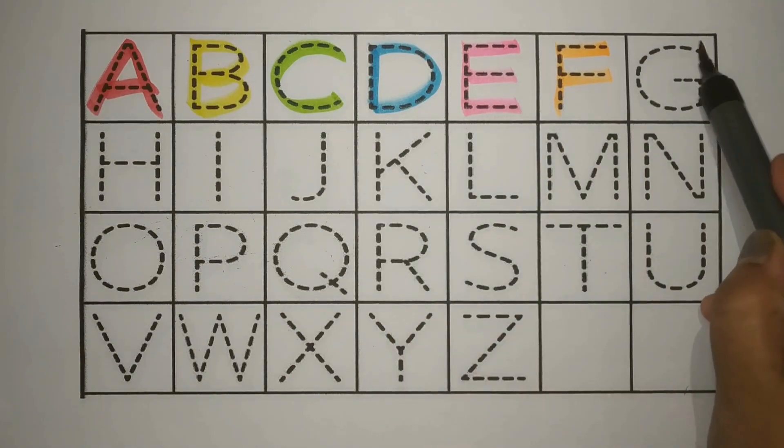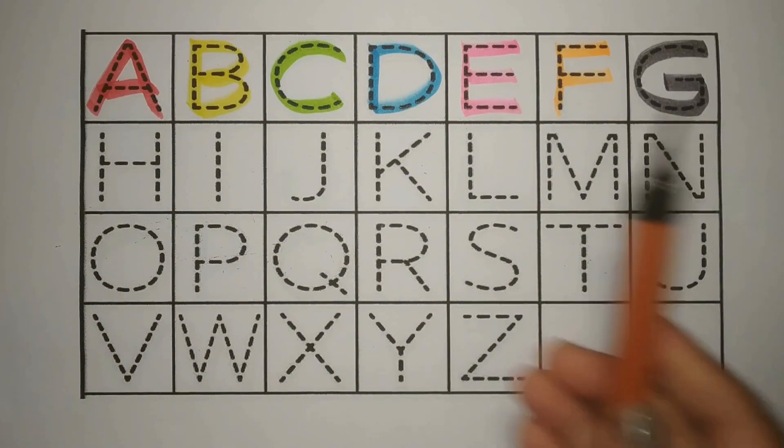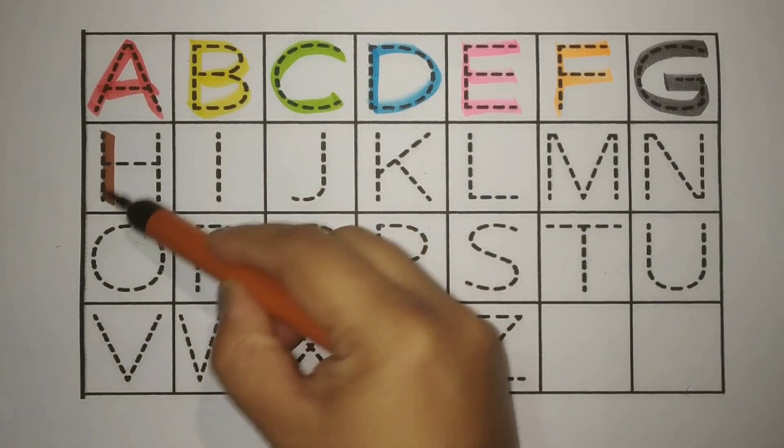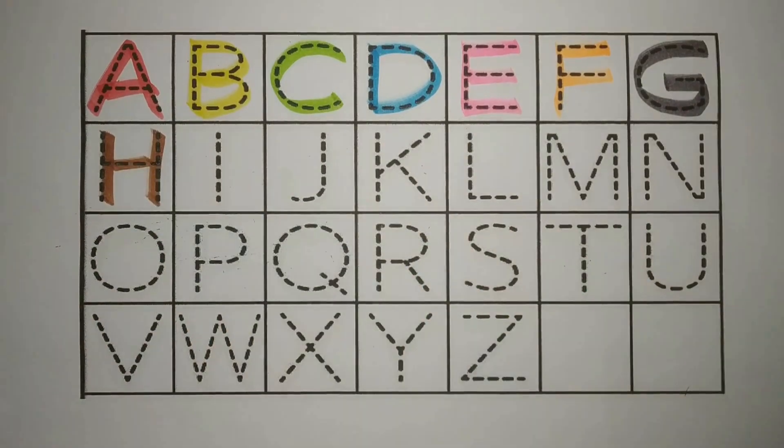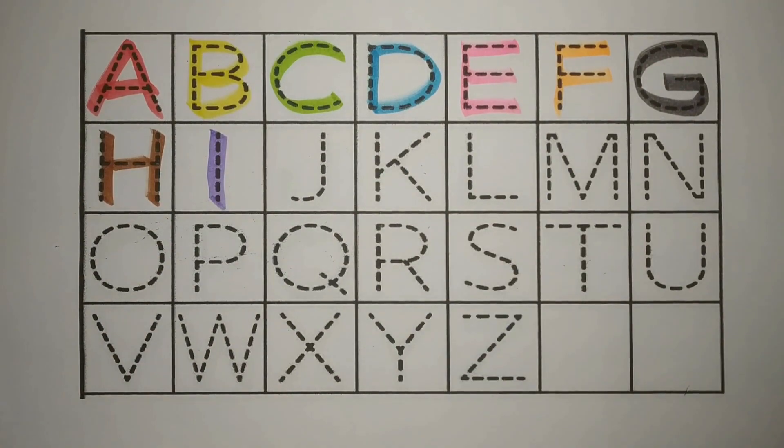Gray G, G for grass, ghas. Brown H, H for heart, chopdi. Purple I, I for ice, burf.